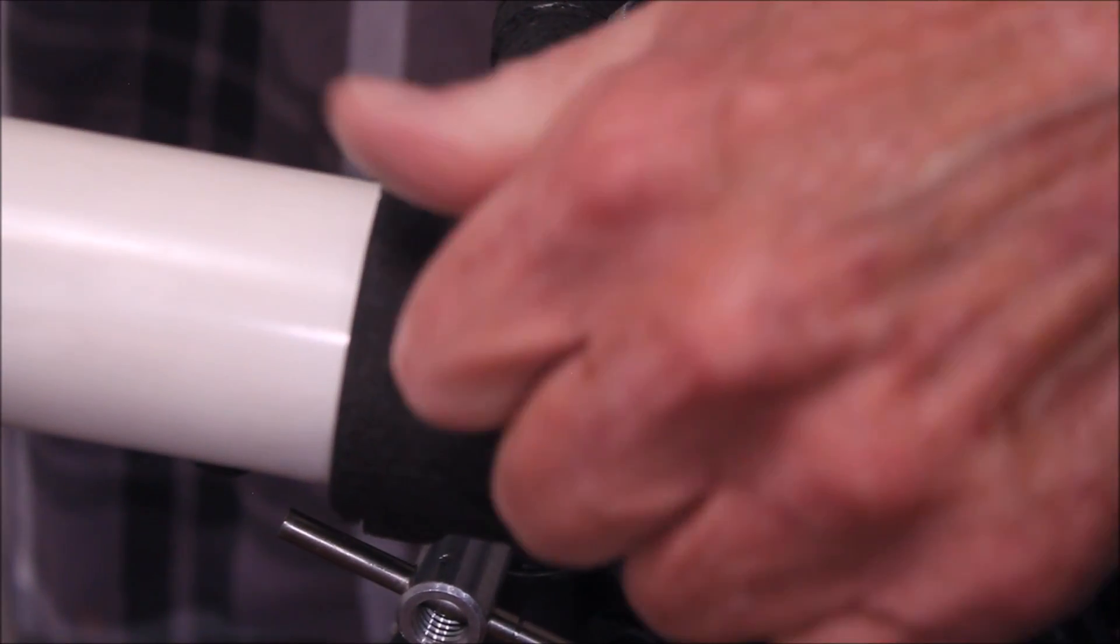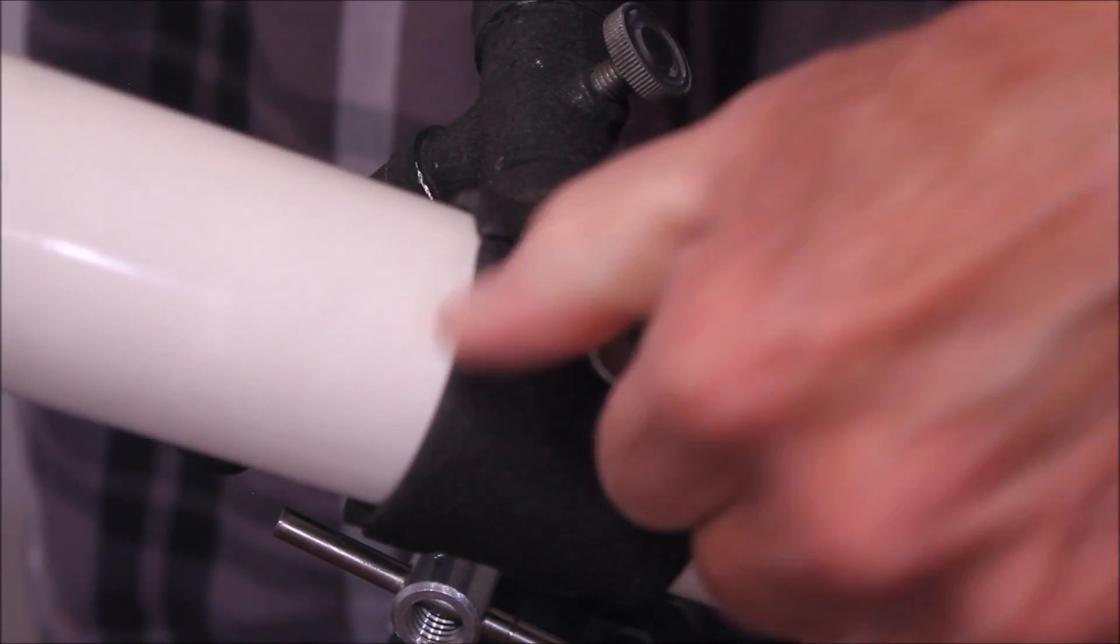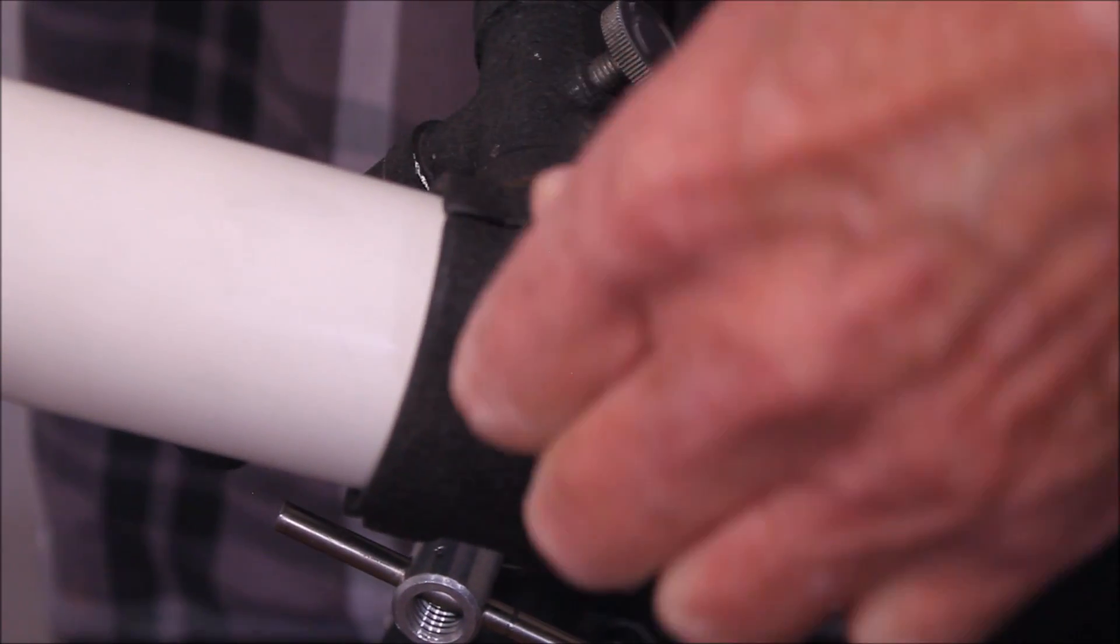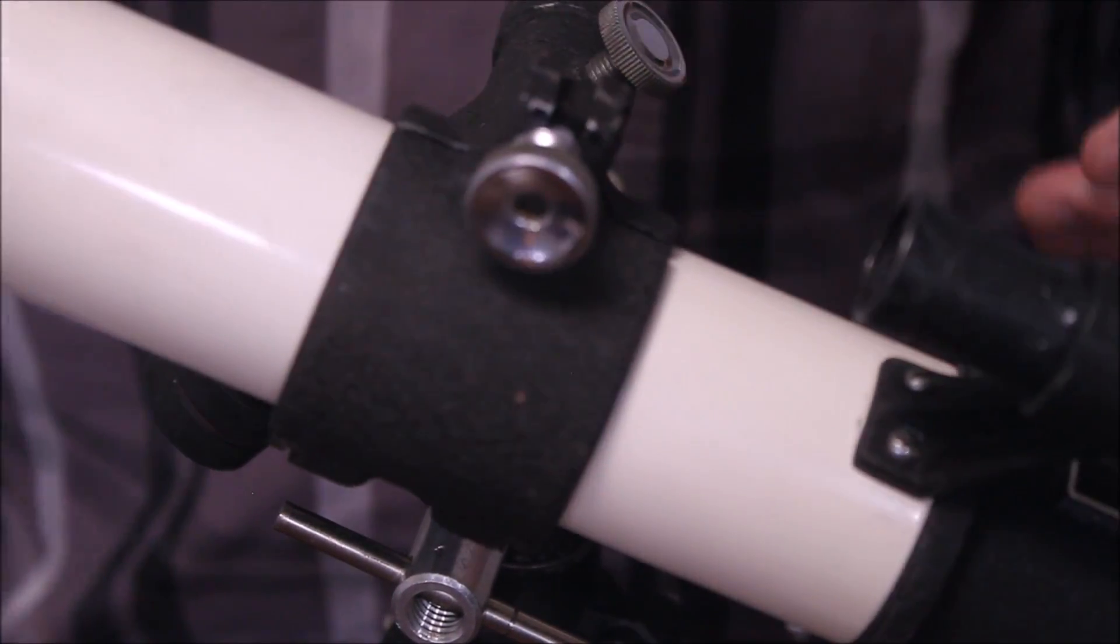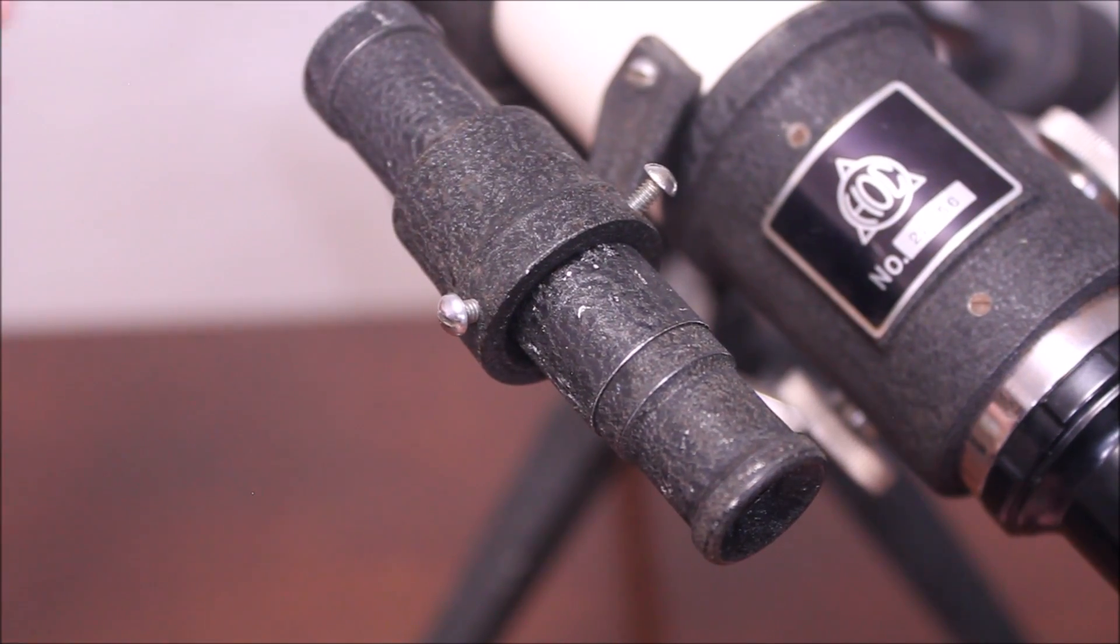It's got a cradle so you can loosen it up and reorient the scope and balance it like so. Here's a close-up look at the little finder.